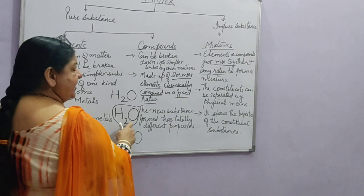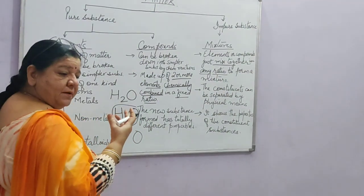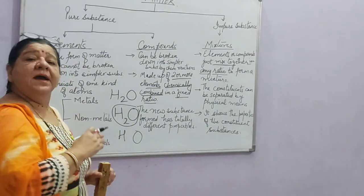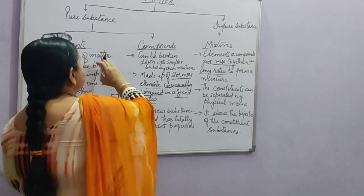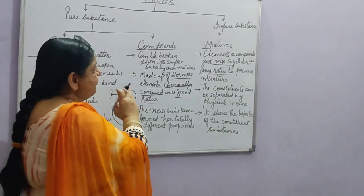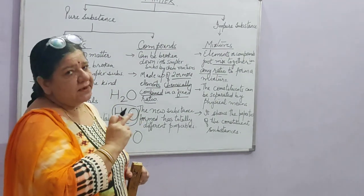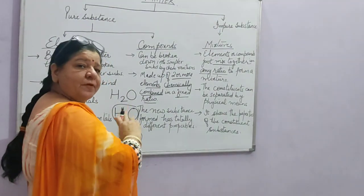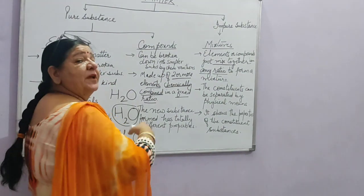Compounds can be separated only by chemical or electrochemical reactions. For example, water when it undergoes electrolysis forms hydrogen and oxygen; otherwise you cannot separate water into hydrogen and oxygen. So the difference between elements and compounds is: elements cannot be further broken down, while compounds can be broken down only by chemical or electrochemical reactions, and the new compound formed has totally different properties from its constituent elements.